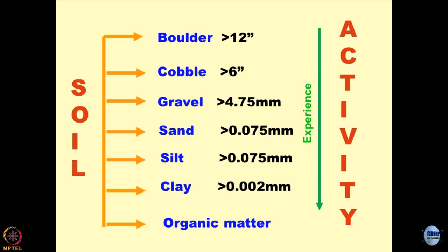One interesting philosophical point: the way particle size decreases, what happens to the activity of the material? It enhances. The more experienced you are, the more refined you become, and the activity increases — the person becomes more productive. Unfortunately we do not talk about organic matter much in geomechanics. All your tests are valid until 2 microns — Stokes law. Less than that is the colloidal form, and colloids control the properties of fine-grained materials the most.